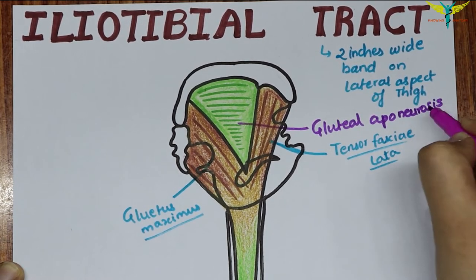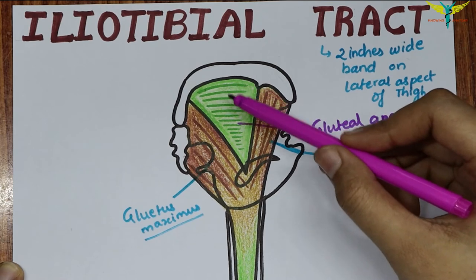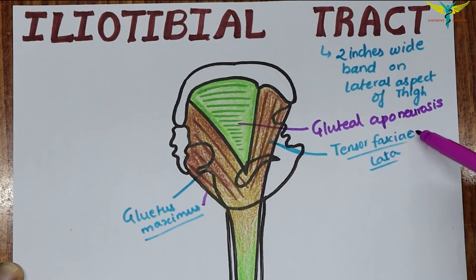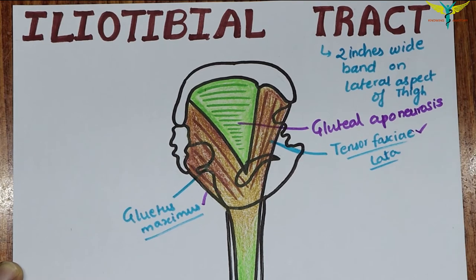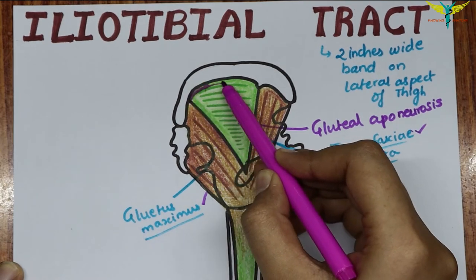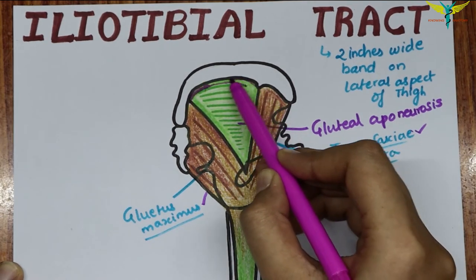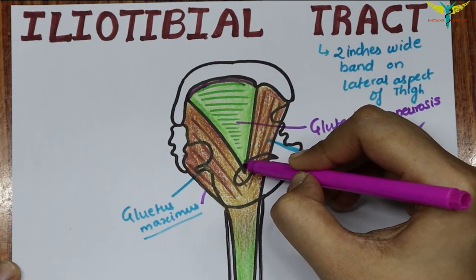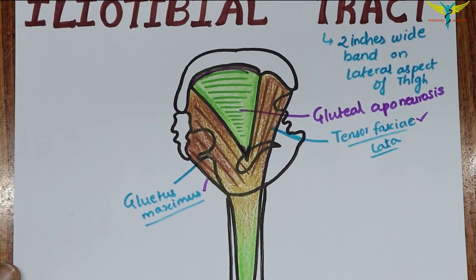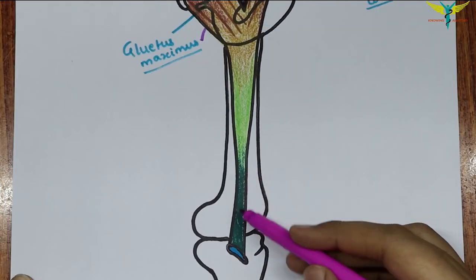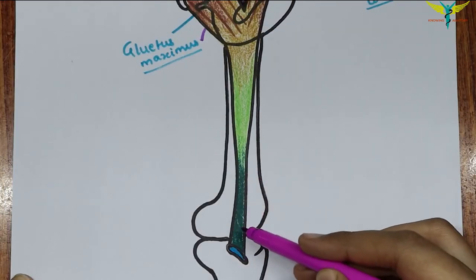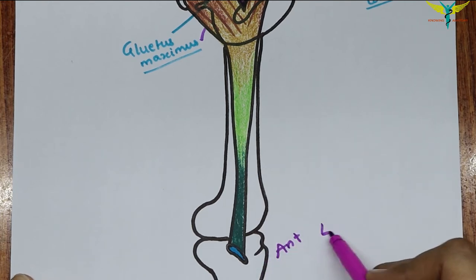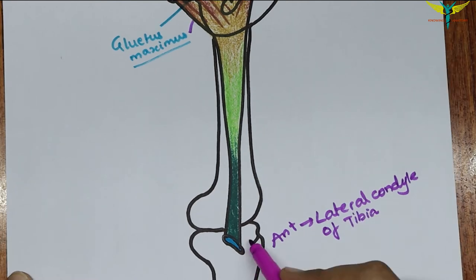The gluteal aponeurosis is the layer of the iliotibial tract present between the gluteus maximus and the tensor fasciae latae muscle. The superficial lamina is attached to the tubercle of the iliac crest, and the deep lamina is attached to the capsule of the hip joint. Inferiorly, the tract is attached to the smooth area on the anterior surface of the lateral condyle of the tibia.